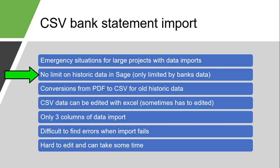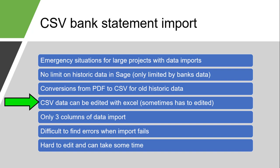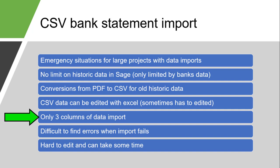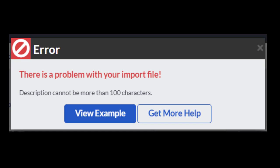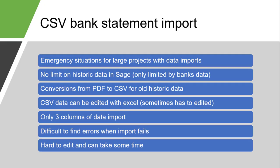It is a relatively easy process to convert PDF documents into CSV files and banks love to give their clients bank statements in PDF file formats. CSV files can be edited to suit your needs. In most circumstances the data must be edited to enable you to import the bank transactions into Sage Accounting. Only three columns can be imported into Sage Accounting which is the date, the description and the amount. Other information that might be useful like the payee and specific references are omitted from the import. The biggest disadvantage of CSV file imports is that finding errors when the import fails tends to be difficult and time consuming, especially if you are new to doing CSV data imports and you have not ironed out all the nuances and troubleshooting areas that come with it.